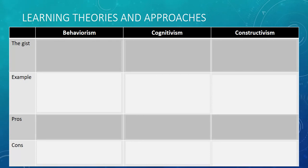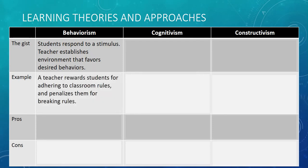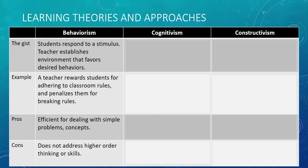So let's get down to the basics — Behaviorism. It's essentially where a student is going to respond to any type of stimulus. The teacher establishes an environment that's going to favor the desired behaviors. For example, a teacher will reward students for following the classroom rules and penalize them for breaking the rules. Some pros are that it's really easy to implement and to deal with simple problems or help students understand simple concepts, but it doesn't really address higher order thinking or skills.